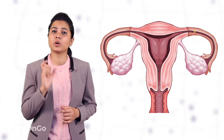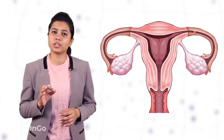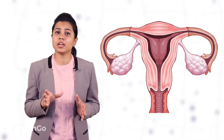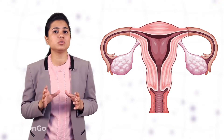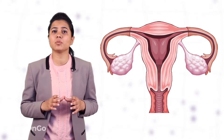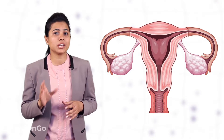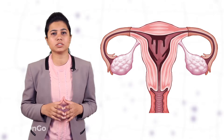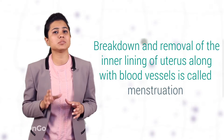Now, the question arises: what happens if the egg is not fertilized? If the egg is not fertilized, it lives for about one day, and if fertilization is not taking place, then the preparation inside the uterus — like thickening and softening of the walls — is not required any longer. So the uterus lining breaks down and comes out through the vagina in the form of blood and mucus. This breakdown and removal of the inner lining of the uterus along with the blood vessels is called as menstruation.